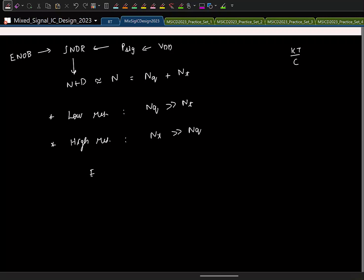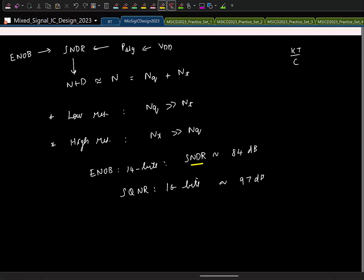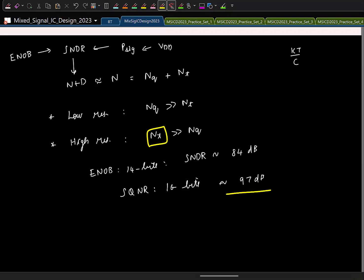For example, if you want an ENOB of 14 bits, it is not uncommon to have an SQNR corresponding to 16 bits. For a 16-bit SQNR, that is roughly 16 times 6, which is about 97 dB. If you want an ENOB of 14 bits, the effective SNDR will be 14 times 6, which is 84 dB. So if you want an overall noise level corresponding to 84 dB, you budget it completely to thermal noise and keep the quantization noise much smaller.